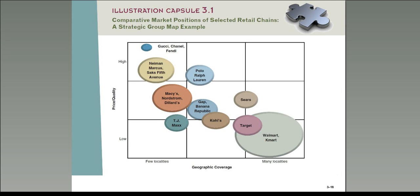Here's an example using retail chains. Along the bottom we have geographic dispersion — how broadly distributed they are — and on the other axis we have their price-quality metric. You can see that different companies go after different kinds of approaches. In the broad geography, low price-quality area, you have Kmart and Walmart — the size of the bubble represents their revenue — and you can see there's very strong rivalry among those players. But they don't really compete with Gucci, which has a very high price-quality position and is much more geographically focused in terms of where it locates its stores.